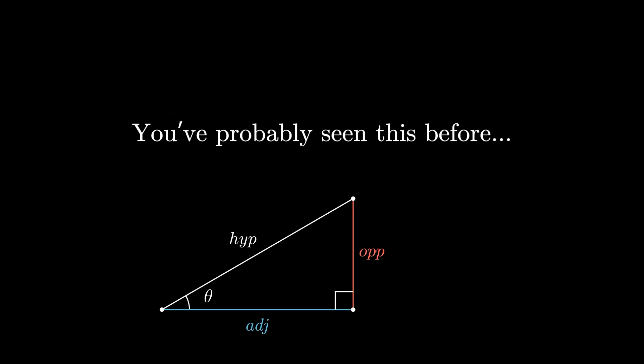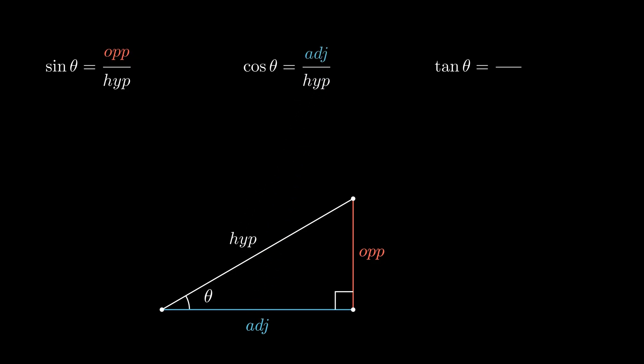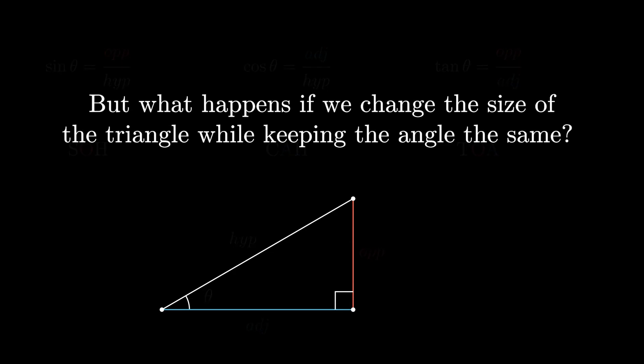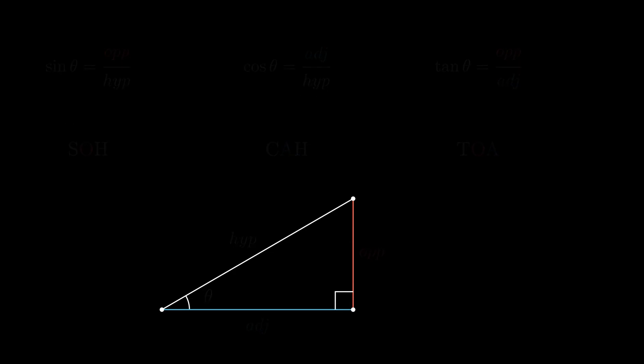You've probably seen this before: sine, cosine defined with the simple right triangle. Sine is opposite over hypotenuse, cosine is adjacent over hypotenuse, tangent is opposite over adjacent. This is what we call SOHCAHTOA. But what happens if we change the size of the triangle while keeping the angle the same? Do the sine and cosine values still stay constant?